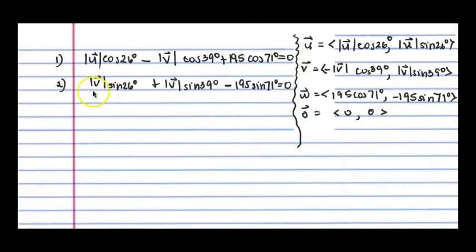We'll do the same for the y component. So for equation two, we have the magnitude of u sine of 26. And then we have the magnitude of v sine of 39. And then we have minus 195 sine of 71. Because remember, w was in the fourth quadrant, the point on the terminal side. And so that's why the y value was negative.